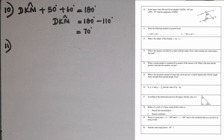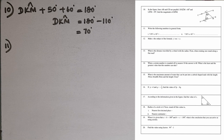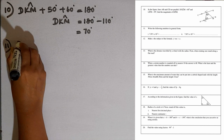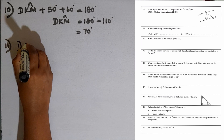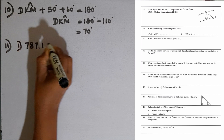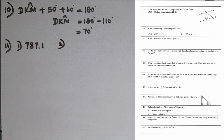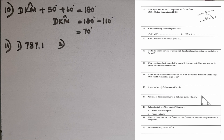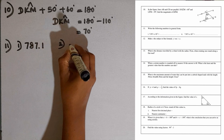Question number 11: write the following numbers in general form. First: 7.871 multiplied by 10 to the power 2. Since 10 squared is 100, multiplying by 100 moves the decimal point two places to the right. For the second part, 0.07871 multiplied by 10 to the power minus 2 means the decimal point moves two places to the left.